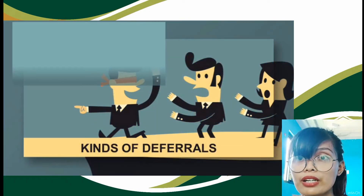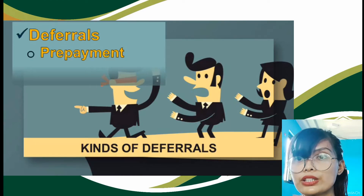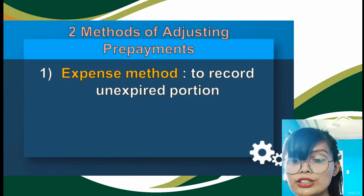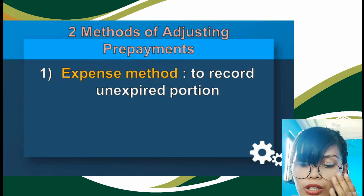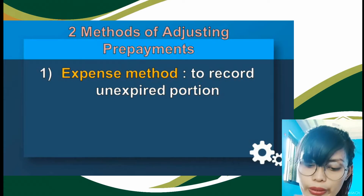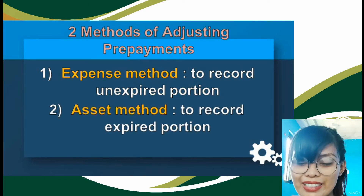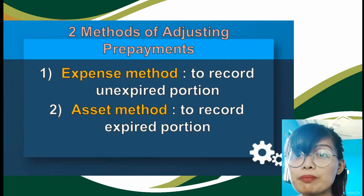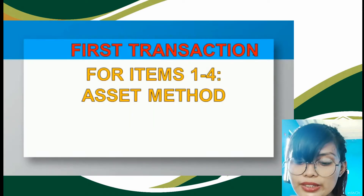There are two kinds of deferrals: prepayment and pre-collections. Under prepayment, we have two methods of creating and adjusting entries. The first one is the expense method, which you will use if you want to record the unexpired portion of your payment. The second one is the asset method, which you use if you want to record the expired portion of your payment.